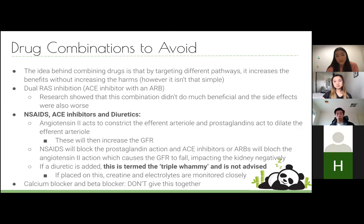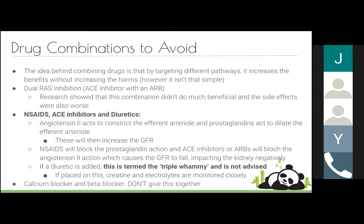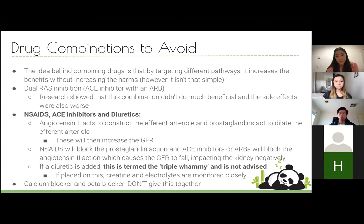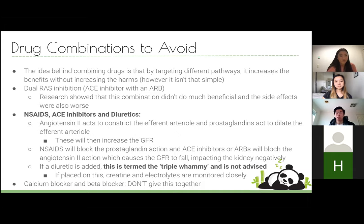Some drug combinations should be avoided. Dual RAAS inhibition is not beneficial. The big important one to know is the 'triple whammy': NSAIDs, ACE inhibitors, and diuretics should not be used together. The reason is that angiotensin II constricts the efferent arteriole, and prostaglandins dilate the afferent arteriole. NSAIDs block prostaglandin production, constricting the afferent arteriole further.